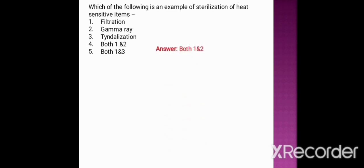Next question: which of the following is an example of sterilization of heat-sensitive material? Option one: filtration. Option two: gamma ray. Option three: tindalization. Option four: both filtration and gamma ray. Option five: both filtration and tindalization. The correct option is both filtration and gamma ray. Tindalization requires a temperature of 100 degrees centigrade, so heat-sensitive materials cannot be sterilized by tindalization.